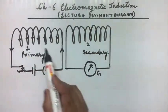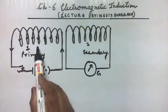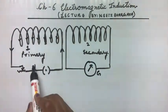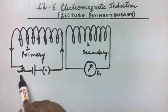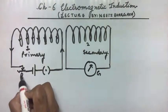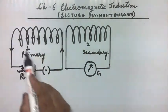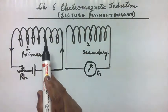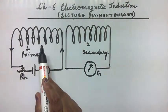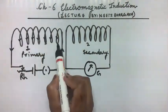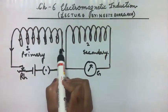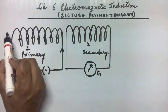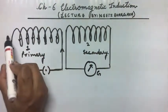When current passes through the primary coil, a magnetic field is produced around it. As the current increases using the rheostat, there is an increase in magnetic field and thus an increase in magnetic flux. Since the coils are placed near to each other, the magnetic field lines will pass through the secondary coil also.